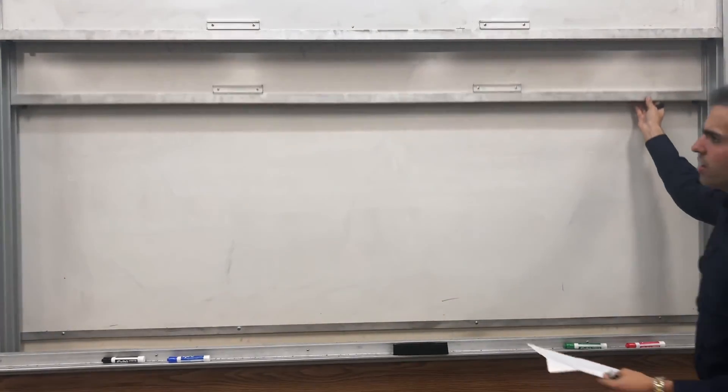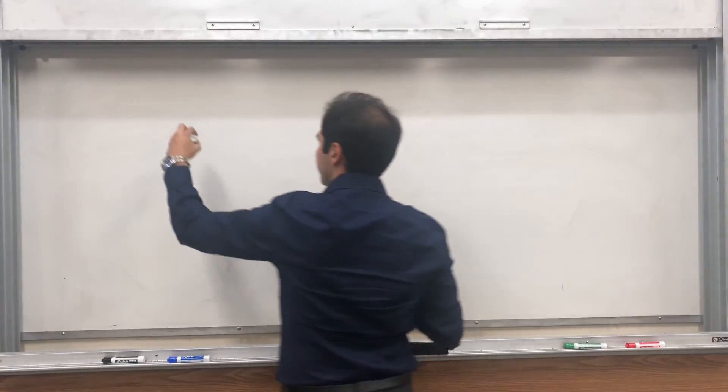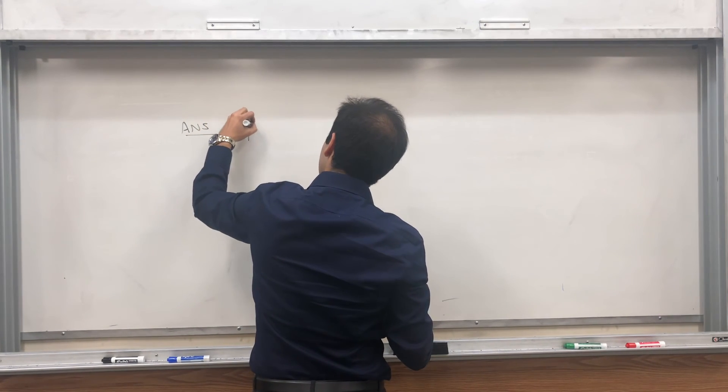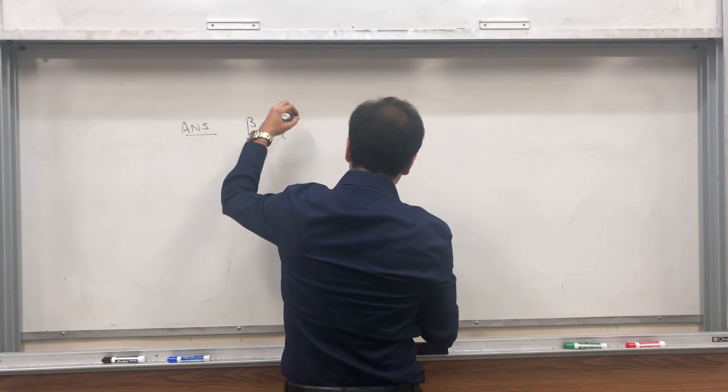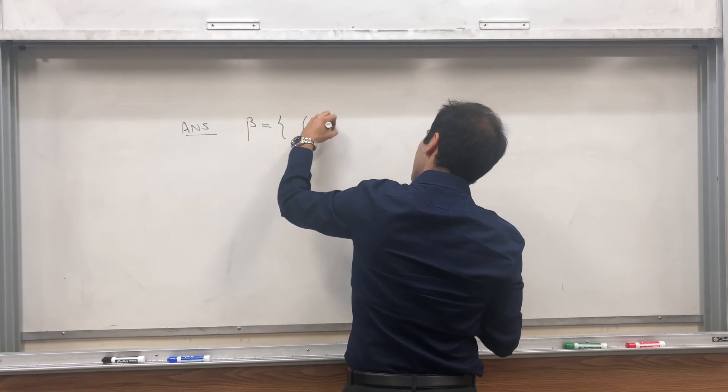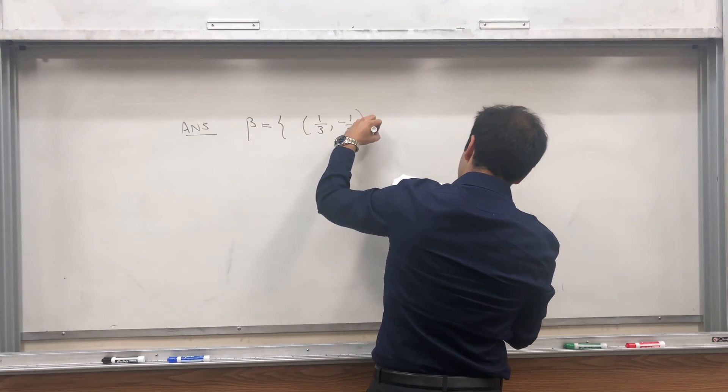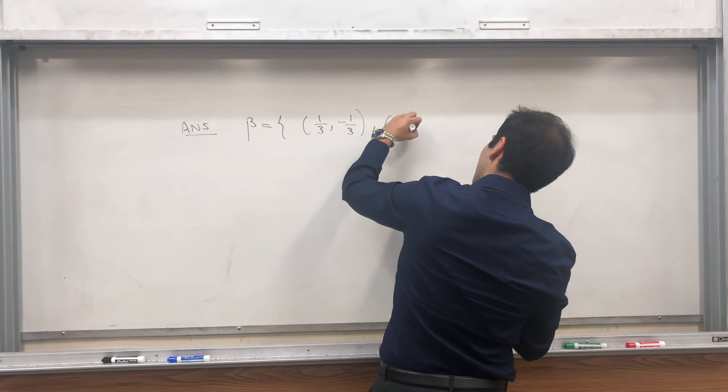So the answer is, what is our basis? Beta, which is simply 1 third minus 1 third, and 2 thirds, 1 third.